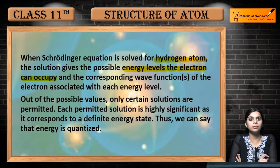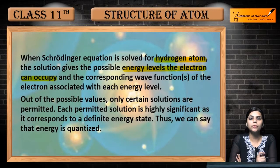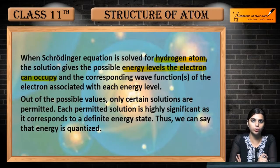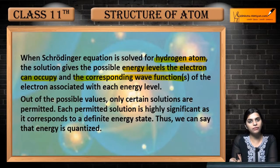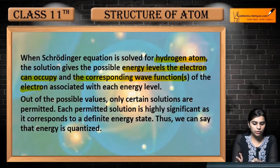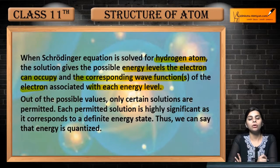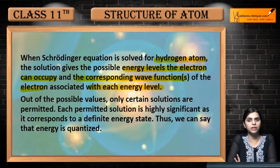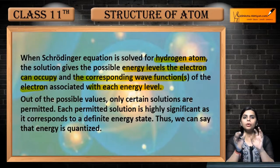When you solve the Schrödinger wave equation, the results also give the corresponding wave functions of the electron associated with each energy level. So from it, you get both the energy levels and the wave functions associated with each energy level.